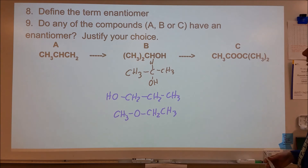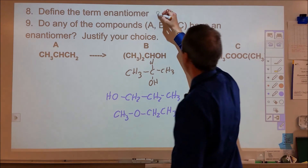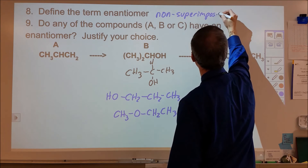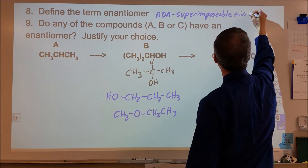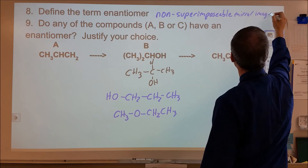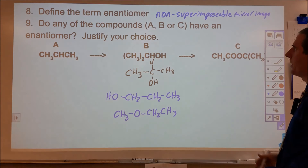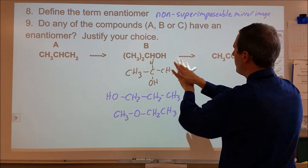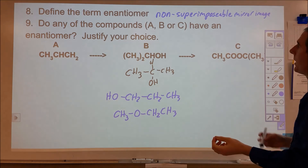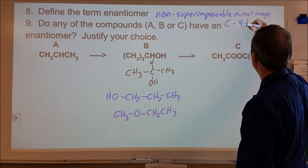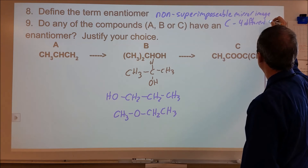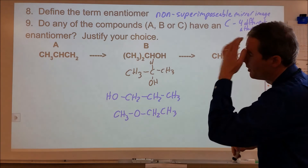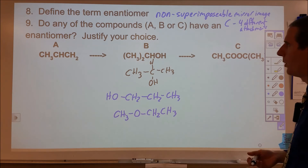Number 8 says define the term enantiomer. An enantiomer is a non-superimposable mirror image. Hands are the common example — you have your left hand and your right hand; they are mirror images of one another but you cannot superimpose them. Anytime we have a carbon with four different attachments, that's going to create a situation where we have an enantiomer, as long as there aren't multiple such carbons that cause a new mirror image to form.